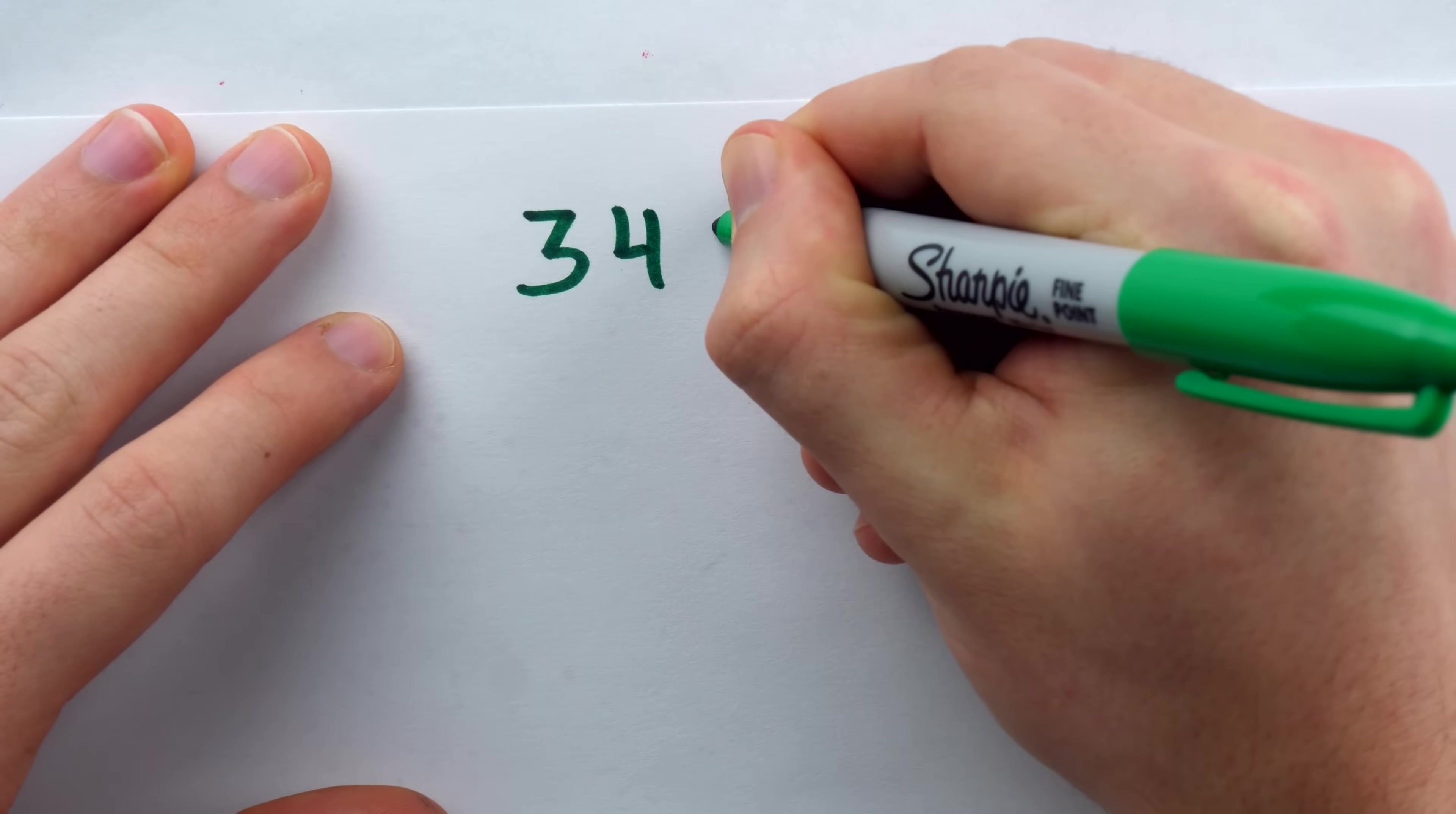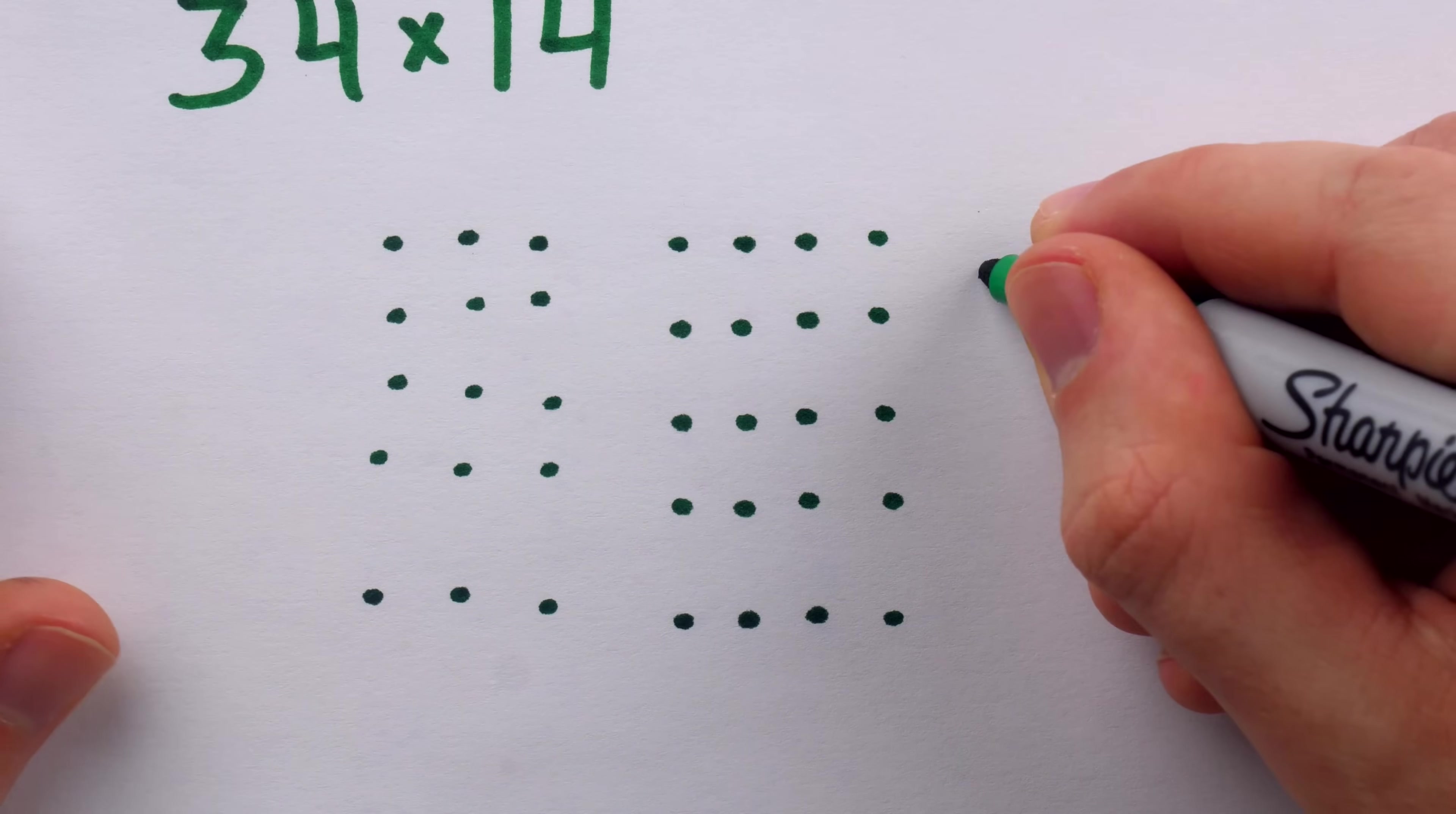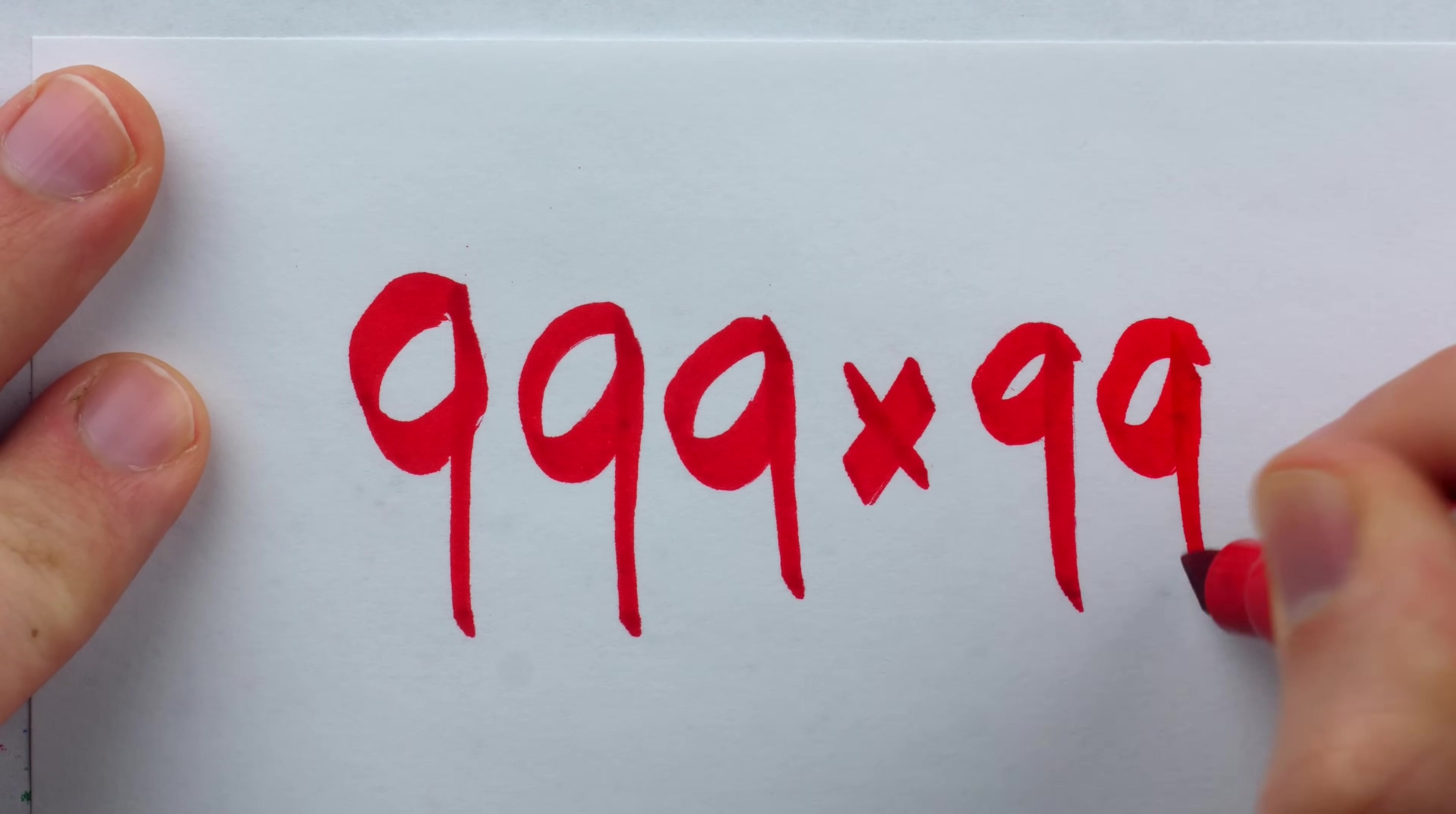We could do the same thing in that multiple digit situation. 34 times 14. Well, that's four dots four times. It is three dots four times. It is four dots one time, and it is three dots one time. And then we just count up the dots and stay attentive to the place value. And you can see the classic dot array method of multiplication is the same as this crisscross applesauce method.